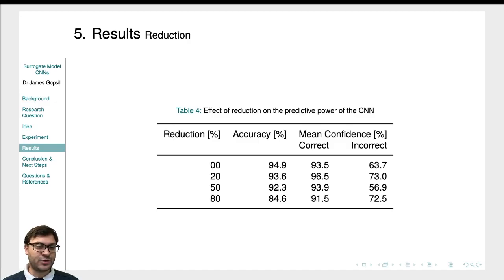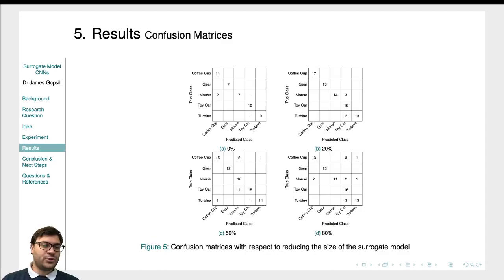We looked at the effect of reduction on the predictive power of the CNN and we were surprised to see that actually we could reduce our dataset that we used to train the CNN on by up to 80% and yet still achieve an 85% accurate prediction of the model that someone has taken a photo of. So that was really promising that we could actually really reduce the number of renders taken per model in that CAD model repository. And that's really important given that we were thinking of potentially rendering up to a million different CAD models.